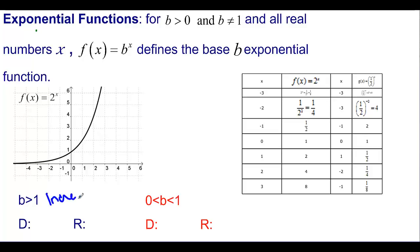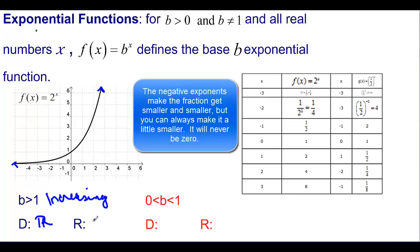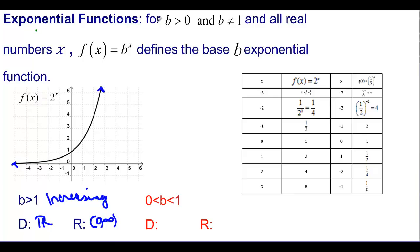Looking at this graph, we can see that it is increasing. The domain is all reals — it's going up and out to the right and down and to the left forever. For the range, this graph never really crosses the x-axis. If I take 2 to the negative of some big number, I'm still going to have a fraction that's not zero, so the range is from zero (exclusive) up to infinity.